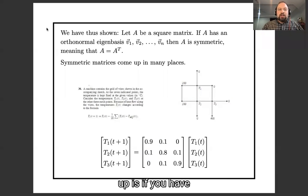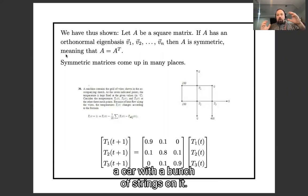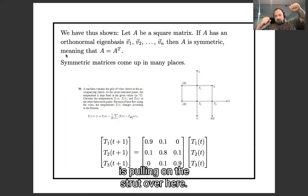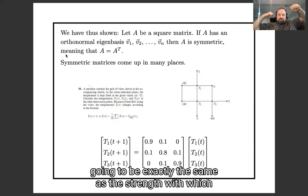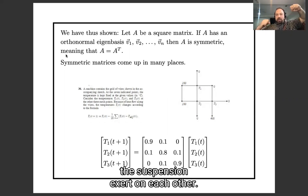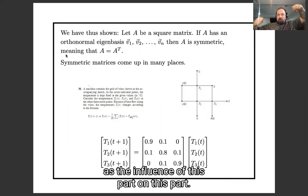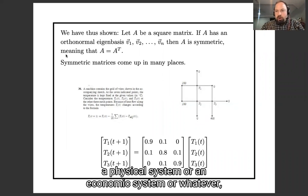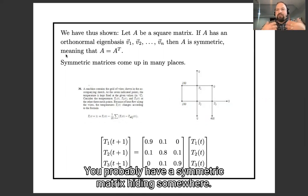Another place this comes up is if you have a physical object with lots of parts pulling on each other — say the suspension of a car with springs, where one bolt pulls on a strut. By Newton's third law, the strength with which the bolt pulls on the strut is exactly the same as the strength with which the strut pulls on the bolt. So if you write down a matrix of all the forces between parts of the suspension, it's going to be symmetric. Any place we have a physical system, or an economic system, where the influence of part one on part two is the same as the influence of part two on part one, you probably have a symmetric matrix hiding somewhere.